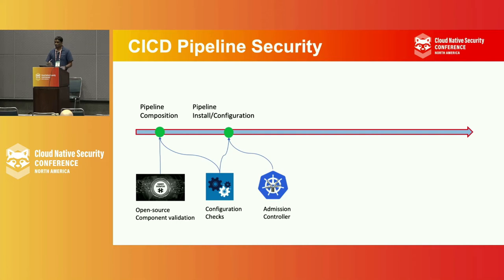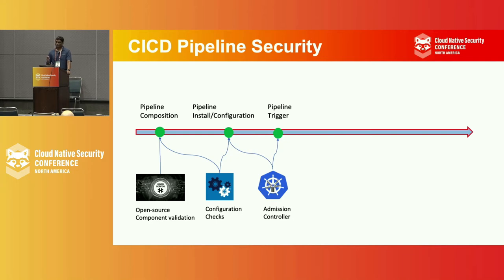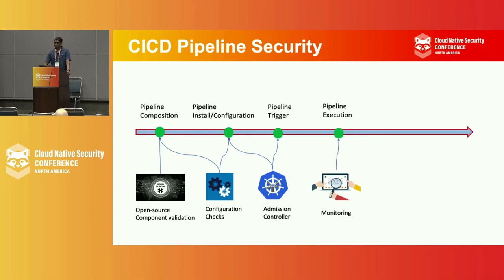We can use an admission controller to ensure that when we are installing, we are only allowing designed and verified artifacts to be configured in the pipeline. Then finally our pipeline gets triggered — it could be a manual event or a GitHub event. This is the last point where we need to do verification again and ensure that the pipeline we are going to instantiate and execute is safe to trigger.